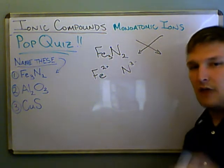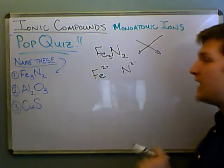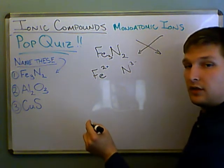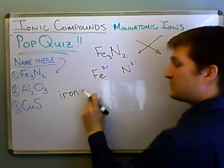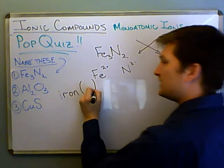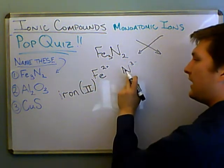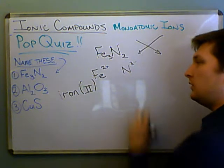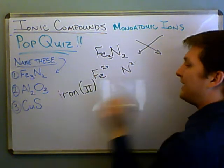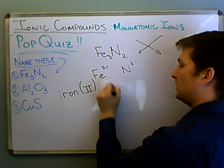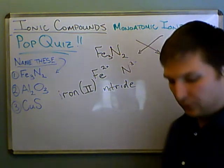The question is how do we name this. Iron is one of those elements that could be two plus or three plus, so we have to specify in the name. We start with the cation name, which is iron, and since it has a charge of two plus, we put the Roman numeral two in parentheses. We have N³⁻ — normally without the minus in elemental form that's nitrogen — so we drop the last syllable and add '-ide'. We get iron(II) nitride. That's the answer to number one: iron(II) nitride.